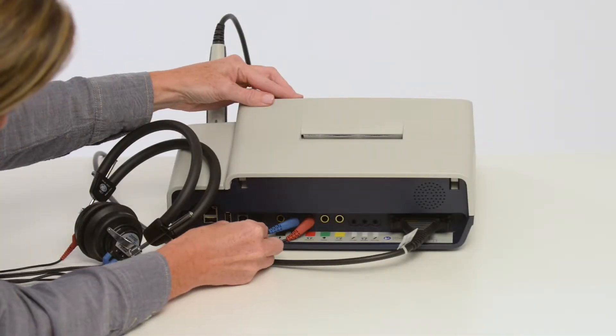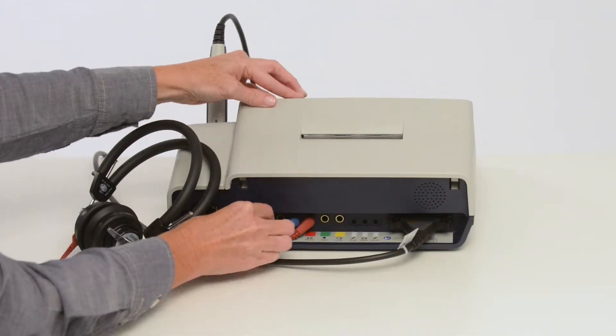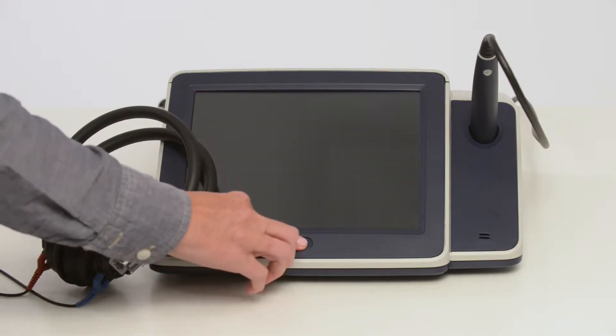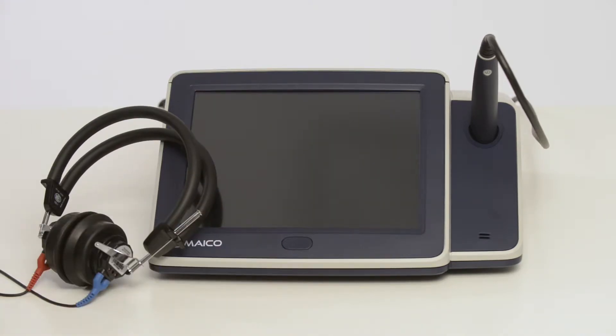Connect the power cord. Power on the device by pressing the button located at the bottom of the display. The tympanometry screen will appear.